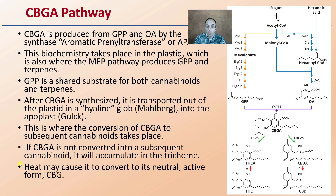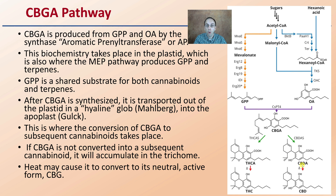Heat may cause a conversion to its neutral active form, just CBG, because heat will cause CBGA to be converted to CBG. The take-home message here is that if we're more familiar with potentially THC or CBD and we're looking back at the chemical processes of the plant, it all kind of originated in the CBGA production of the plant. So if a plant cannot produce a lot of CBGA or is a poor producer, it will also be a poor producer of other cannabinoids you might be more familiar with.